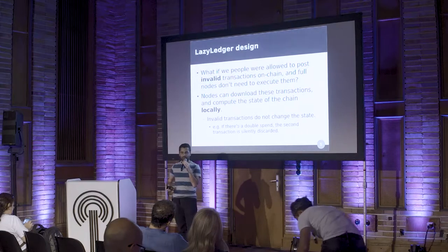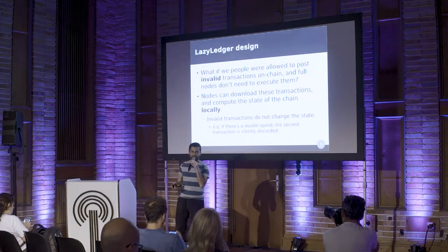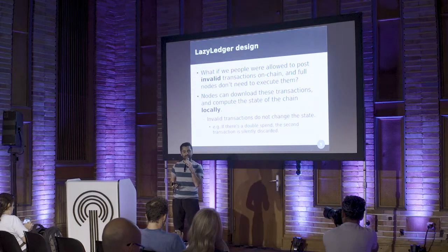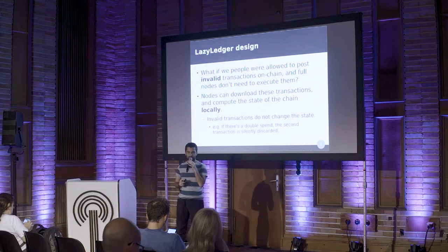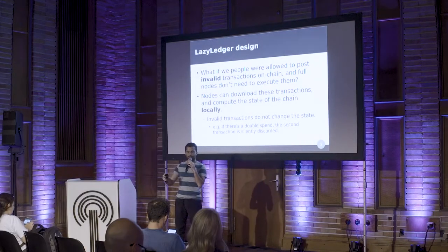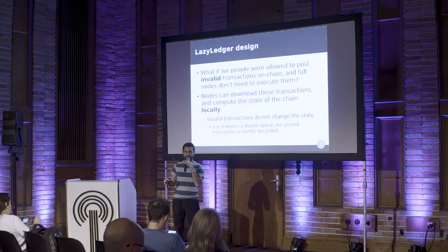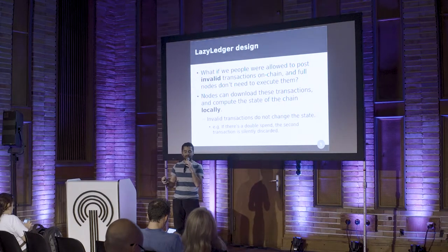Obviously this is a huge bottleneck because every full node has to download and execute every single transaction and run it through a state machine to make sure that all the transactions in all of the blocks are valid. So if you wanted to decouple the consensus layer or the data availability layer from the execution layer, you can create a version of Bitcoin or Ethereum where you are actually allowed to post invalid transactions on the chain.